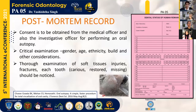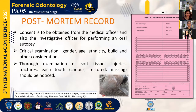After antemortem records, we have the post-mortem record. In post-mortem records, it is necessary to first take photographs prior to the autopsy, and consent is obtained from a medical and investigative officer for performing an oral autopsy. Then a critical examination is done to determine gender, age, ethnicity, build and other considerations — including examination of soft tissue injuries, fractures and each tooth, whether it could be carious, restored or missing. We then start with the autopsy. One incision is made from the corner of the mouth to the tragus of the ear, giving a wider view. Careful lip and cheek folding is done for the muscles, and the oral cavity is opened by traction. Any prosthesis, appliance or foreign body material present is removed and a photographic record is obtained.